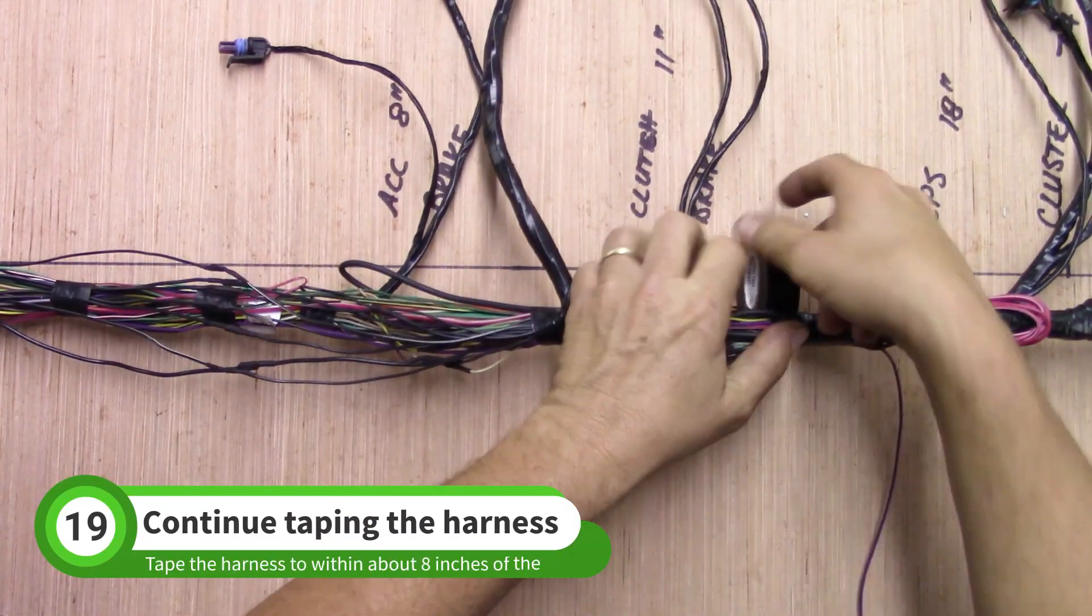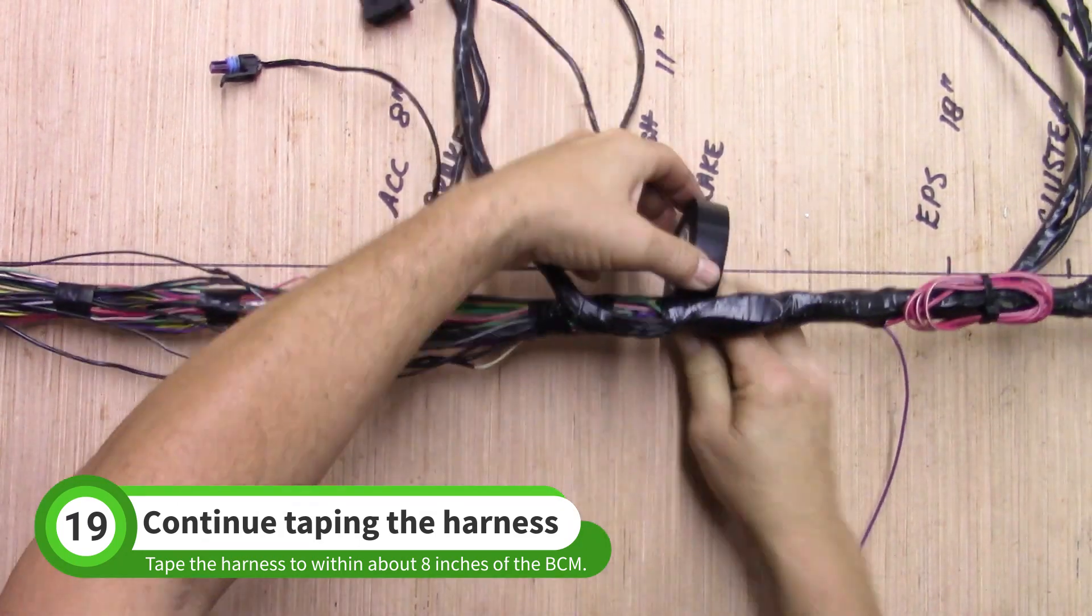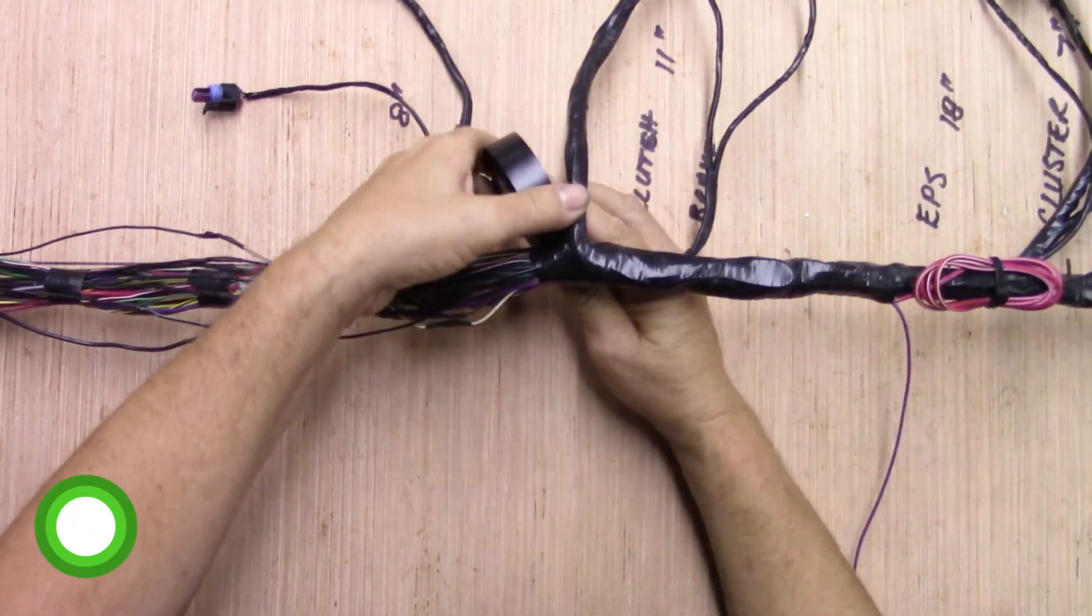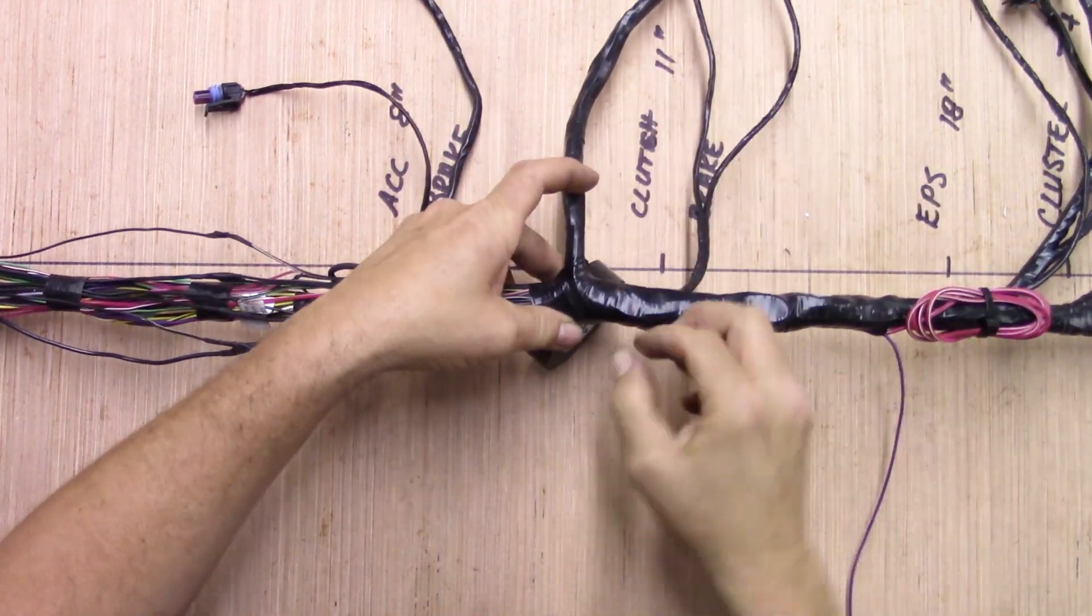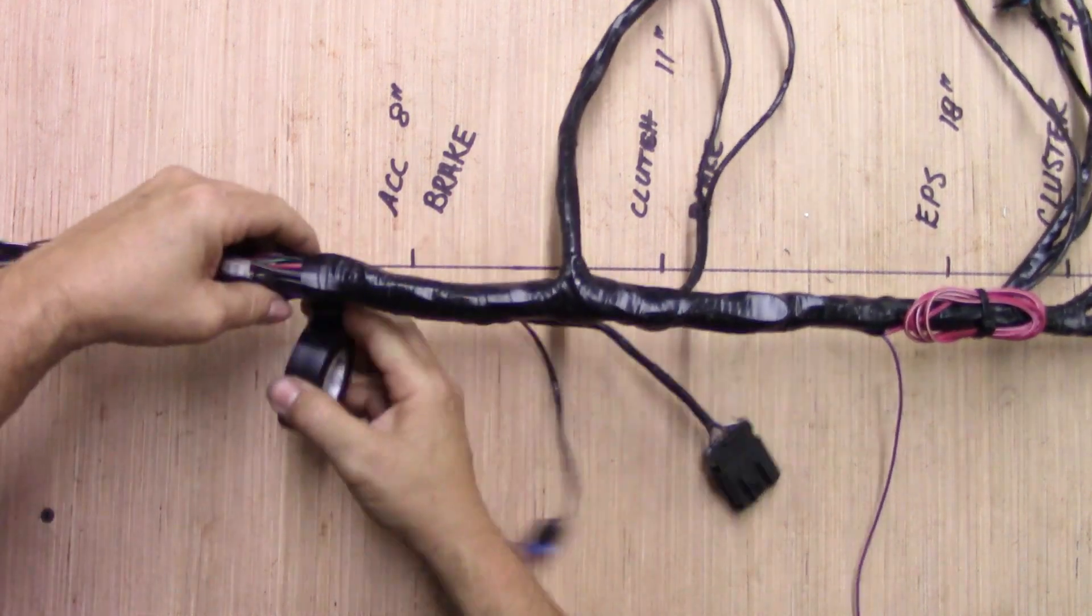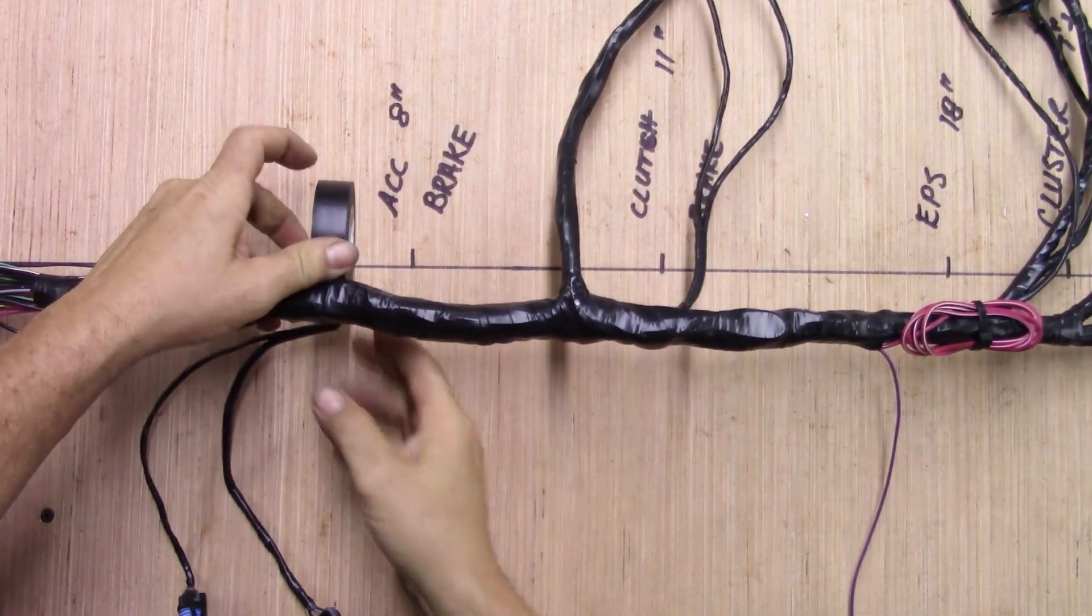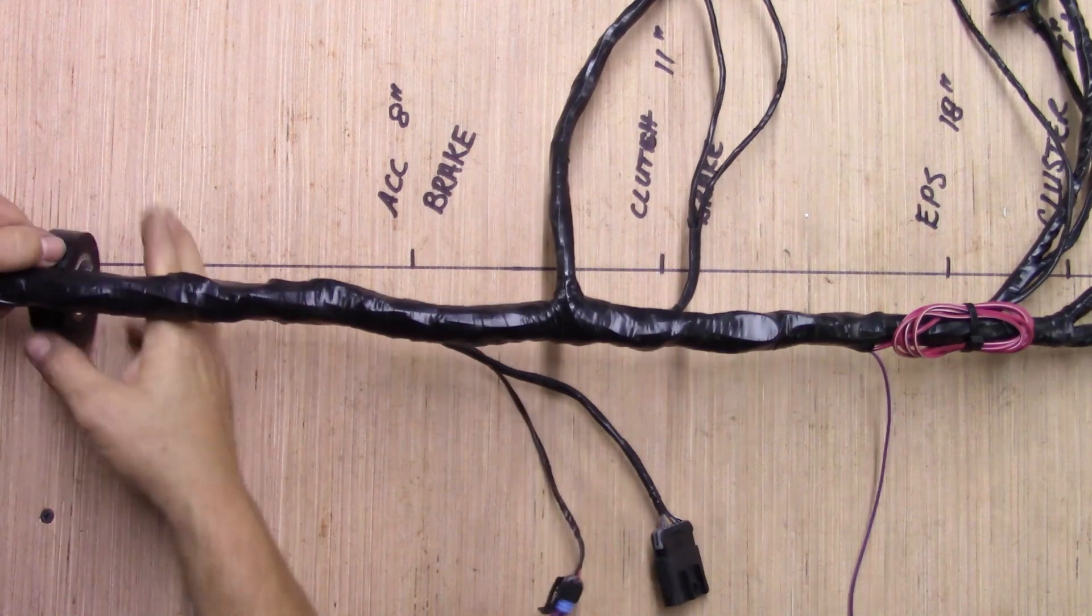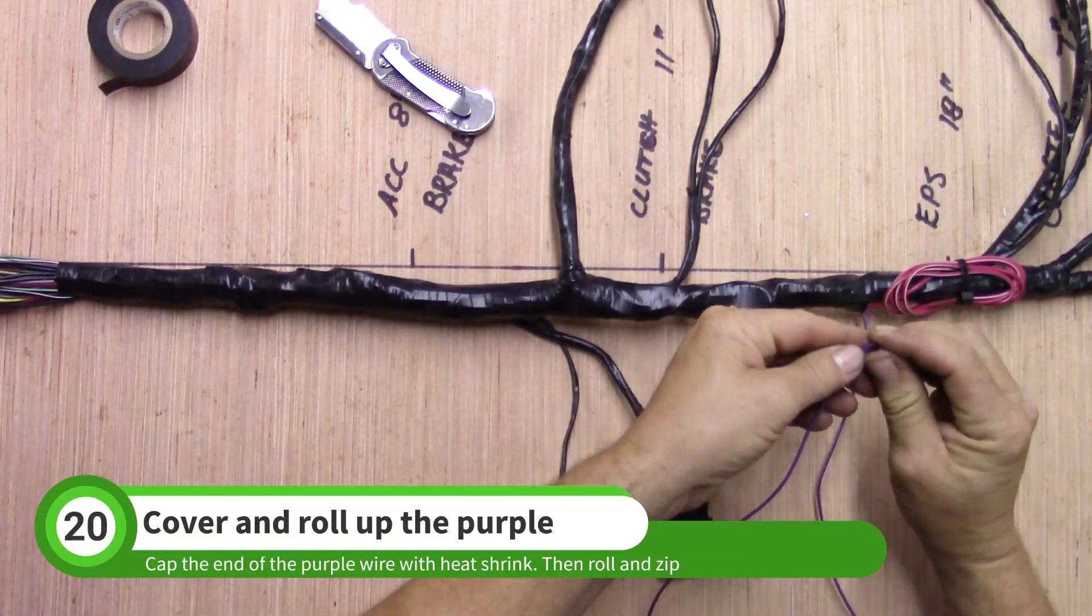Continue taping the harness. Notice how we double back around some of the wires coming out of the harness. Stop taping about eight inches from the BCM. Roll up the purple wire in the same way as the red wire.